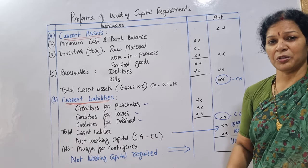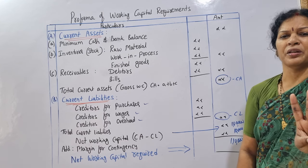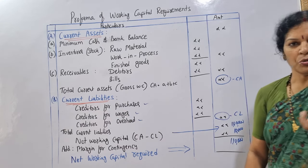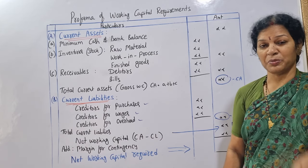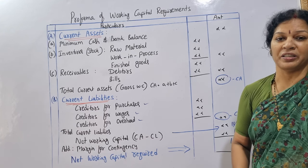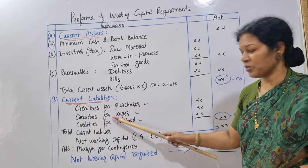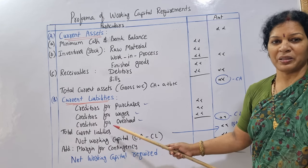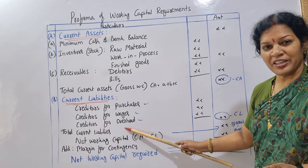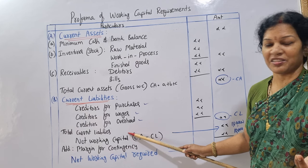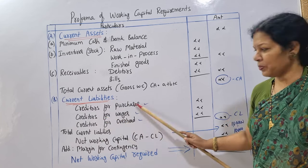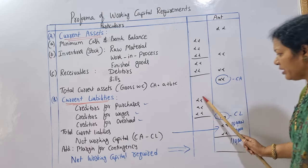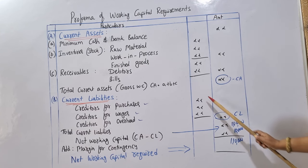Now focus on the current liabilities. Current liabilities have three headings: creditors for purchases — if we purchased on credit, we owe those creditors; creditors for wages; and creditors for overhead expenses. These three make up the total current liabilities.